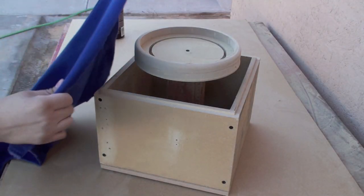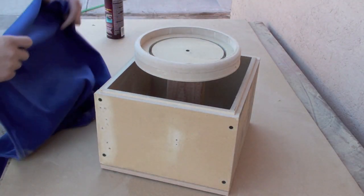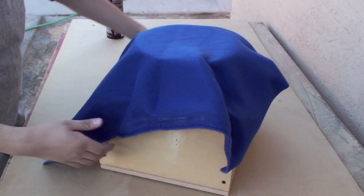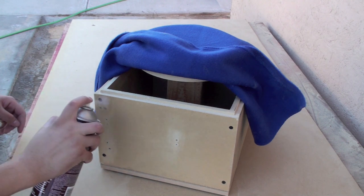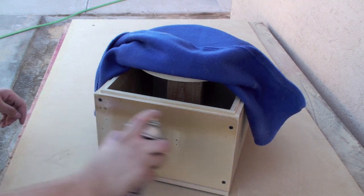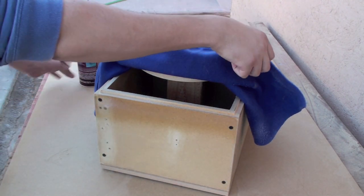We'll be using polyester fleece for the wrapping. Cut the necessary length and lay it over the enclosure. Begin by spraying adhesive on one side and pressing the fleece onto it. It should attach easily.